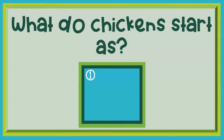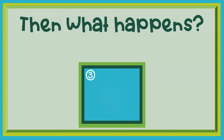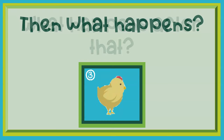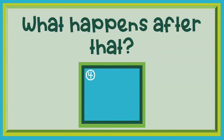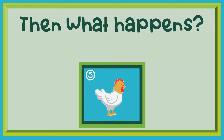What do chickens start as? An egg. What happens next? A chick hatches. Then what happens? The chick grows and gets bigger and bigger. What happens after that? It turns into an adult chicken.